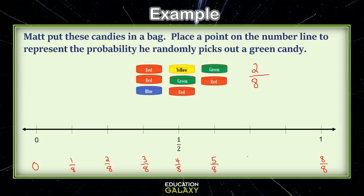Five eighths, six eighths, and seven eighths. So our probability was two eighths, which is right here. There's our point.